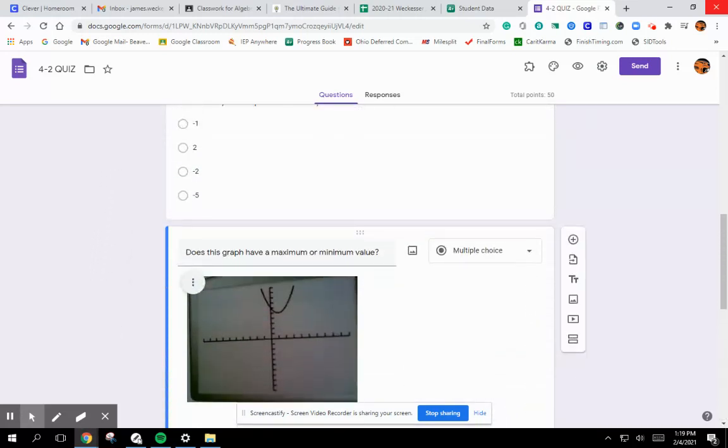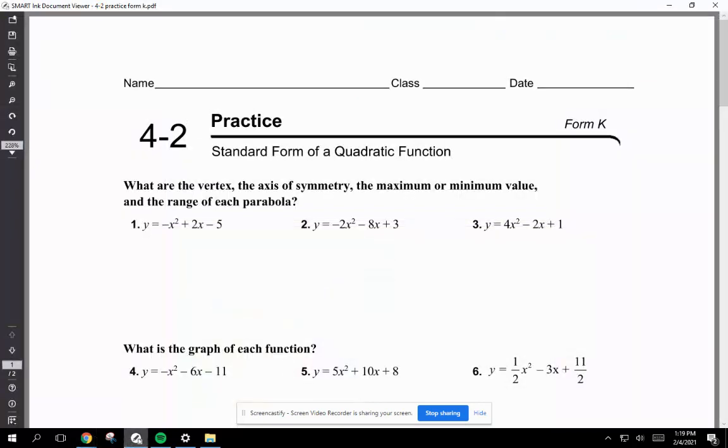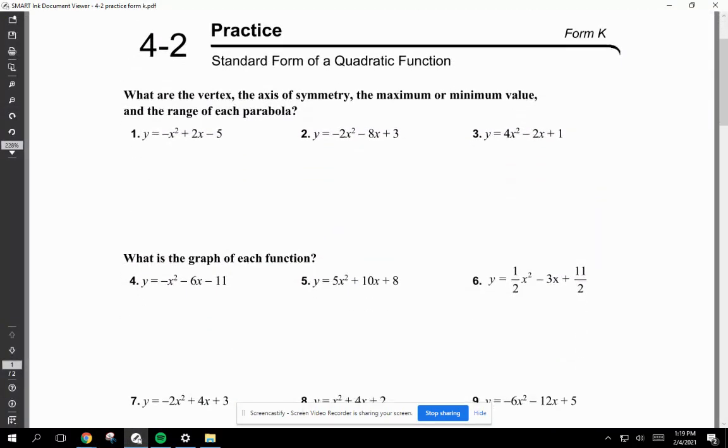Next, let's look at the homework. Here's the homework 4.2. Standard form of a quadratic function. What are the vertex, the AOS, the maximum or minimum value in the range of each parabola?